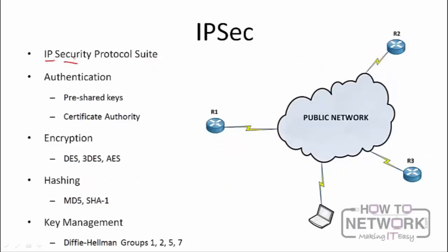IPSec stands for IP Security. It's not a single protocol but a protocol suite — a collection of protocols used to determine how VPNs are formed. The goal is to secure private data over public infrastructure. For authentication, IPSec uses pre-shared keys: you configure a matching key on both router 1 and router 3, and when they negotiate the VPN they exchange and validate these keys. If the pre-shared keys don't match, the VPN will not come up.